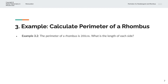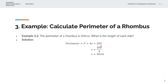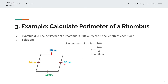In the fourth example, we're given the perimeter of the rhombus is 200 centimeters, and we'll calculate the length of each side. So perimeter P equals 4 times S, and that equals 200. Solving for S: S equals 200 divided by 4, and that simplifies to S equals 50 centimeters. Visually, we have a rhombus of sides 50 centimeters, and the sum of all four sides is 200 centimeters.